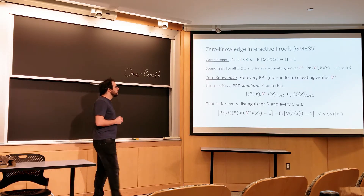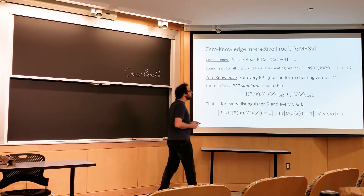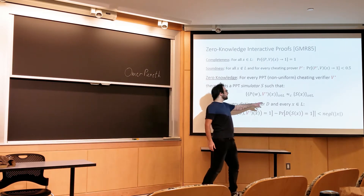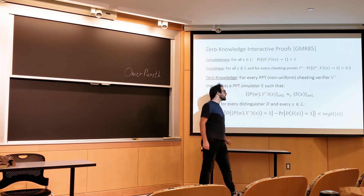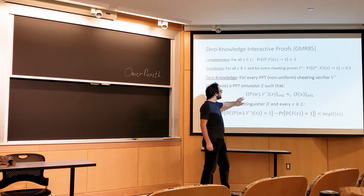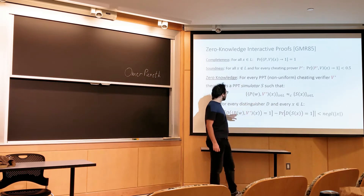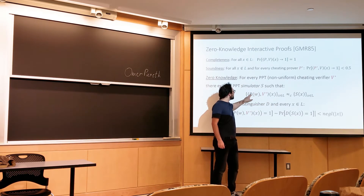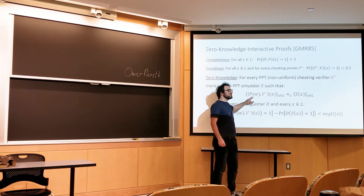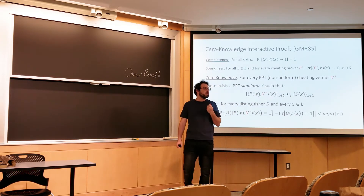W is the witness for the fact that x ∈ L. This definition only works for statements that are true. Part of the definition talks about the interaction with the honest prover — the honest prover, in order to prove the statement, must have a witness.